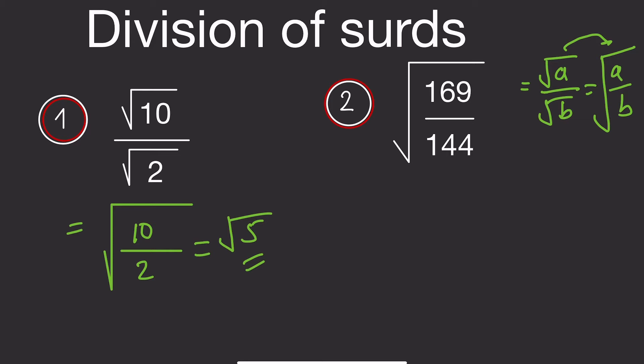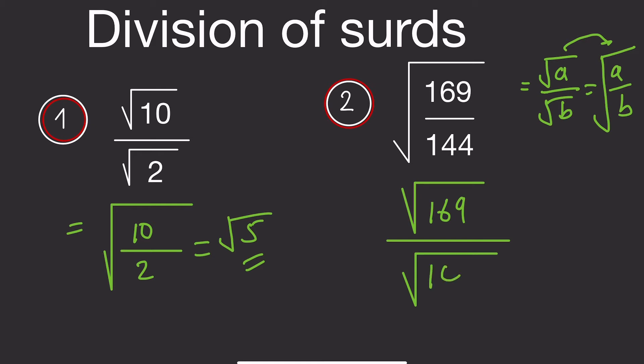Now for number 2. For number 2, it is instead preferable to separate. Let's look at number 2 — I can separate this as the square root of 169 divided by the square root of 144.